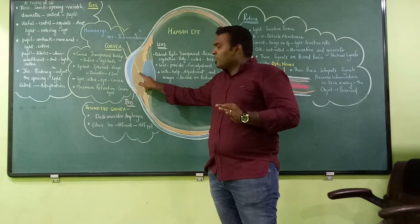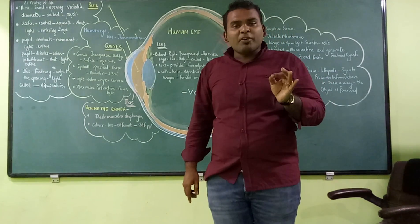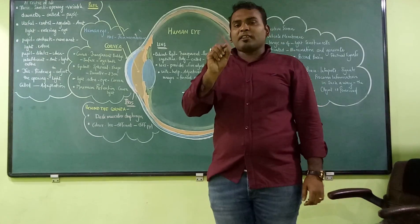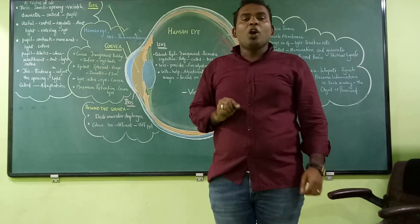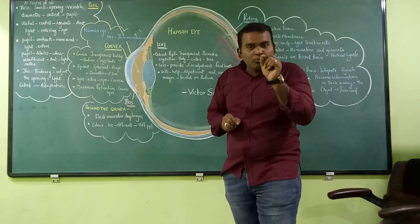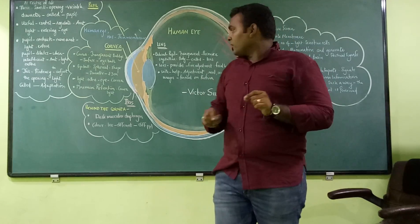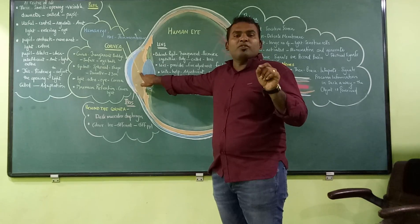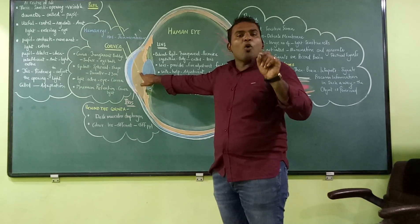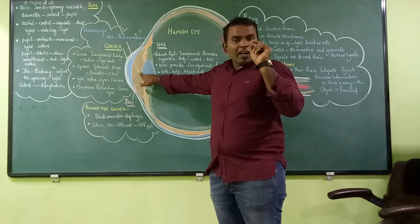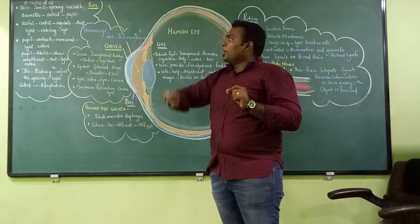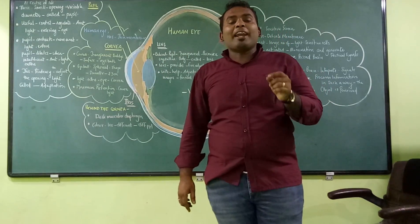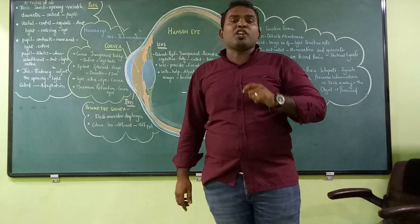At the center of the iris — you can find this even in your own eyes, just stand before the mirror and look — there is a small opening of variable diameter, and this small opening is called the pupil. This pupil is very useful in controlling and regulating the amount of light entering your eye.